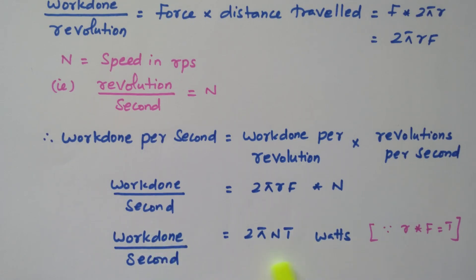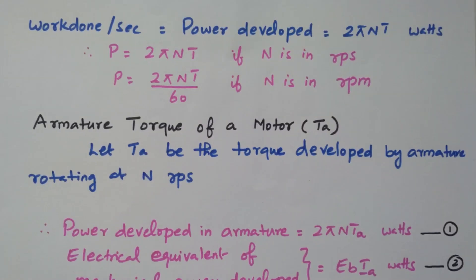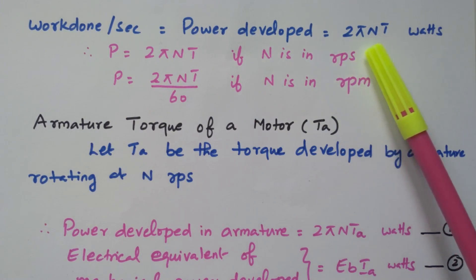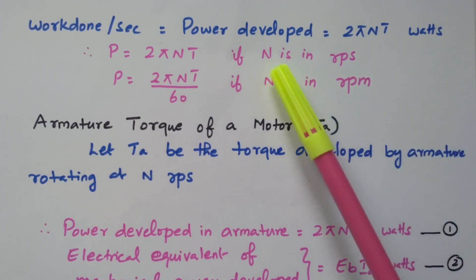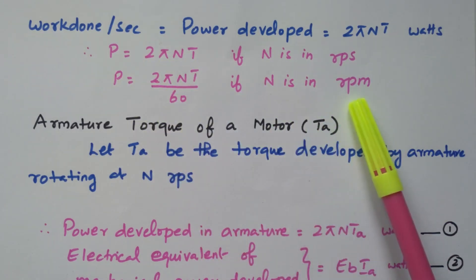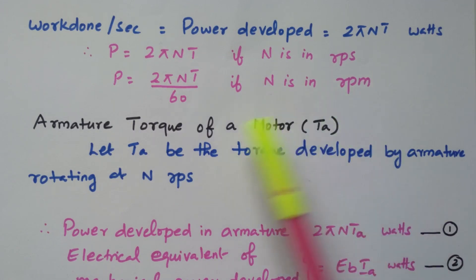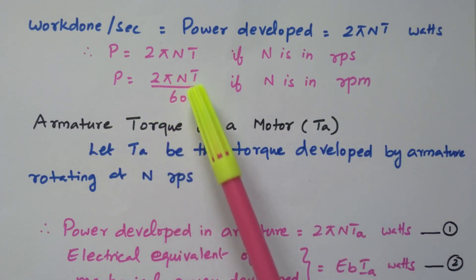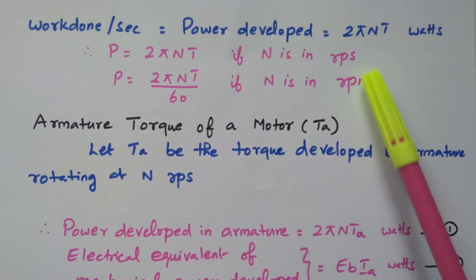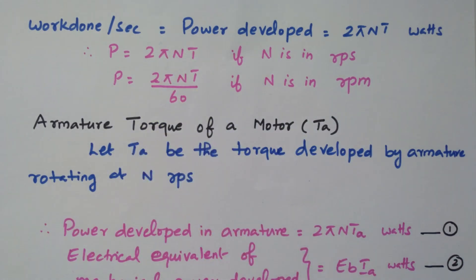So the power developed in the motor is 2πNT watts. If speed is in RPS, P equals 2πNT. If speed is in RPM — revolution per minute — then power developed equals 2πNT divided by 60. Based on the speed unit used, we apply the appropriate formula.